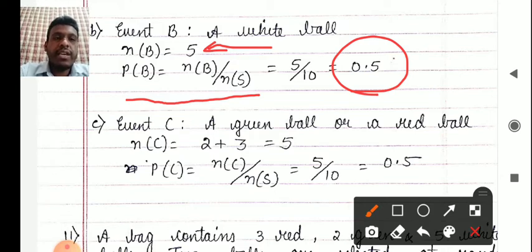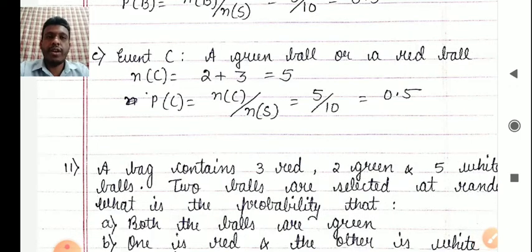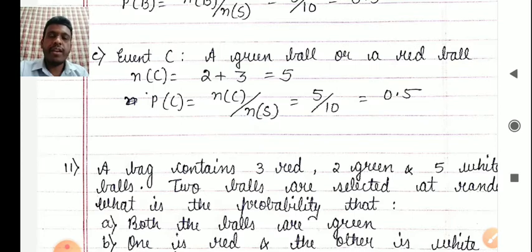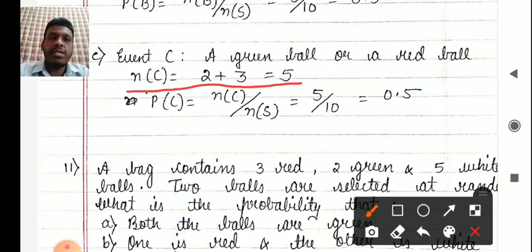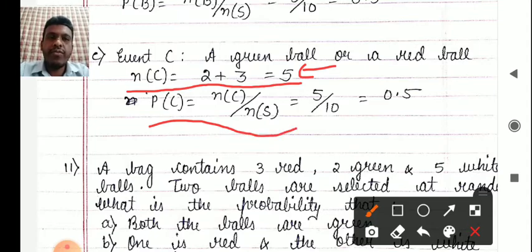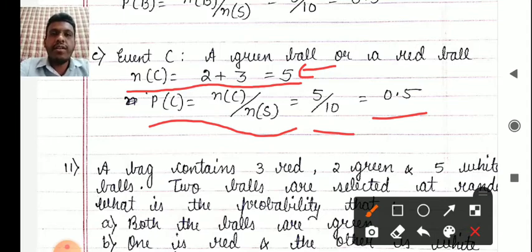Now event C: a green ball or a red ball. That means we are considering balls that are either green or red. There are 2 green balls and 3 red balls, so totally 5 balls are available for this selection. So P(C) = n(C) / n(S) = 5 / 10 = 0.5. This covers the selection of balls problem.